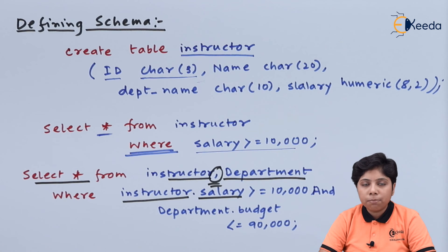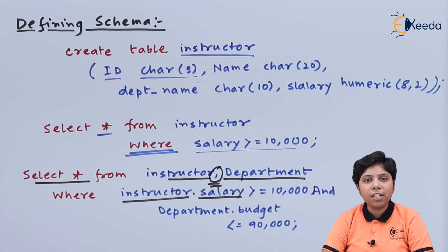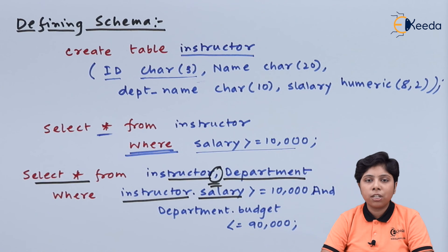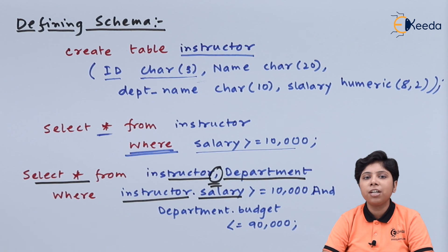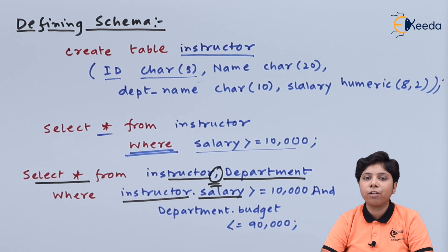This is because sometimes query languages are not able to display results or communicate over the network on their own. The other approach is having the host language directly translate the DDL and DML via a compiler or interpreter, which compiles the SQL statements into the host language environment so the host language can execute them. In this way, a relational database is handled on a relation basis by DDL, DML, and host language premises.